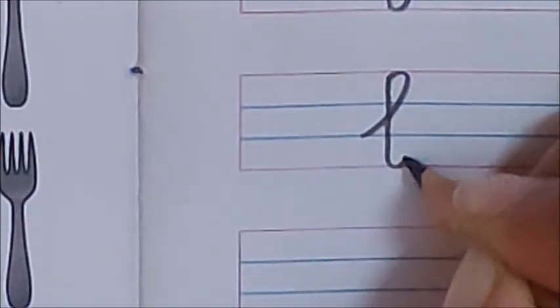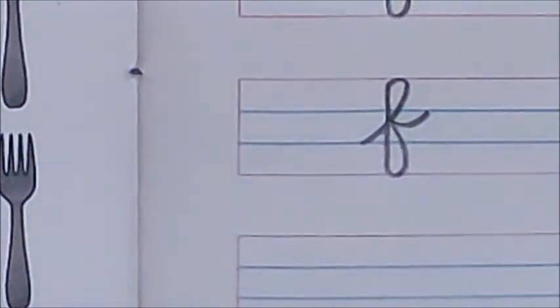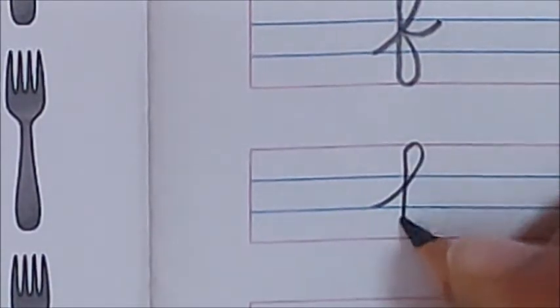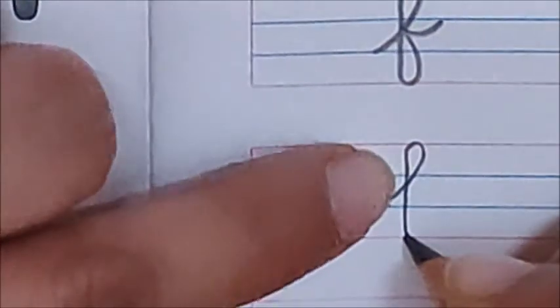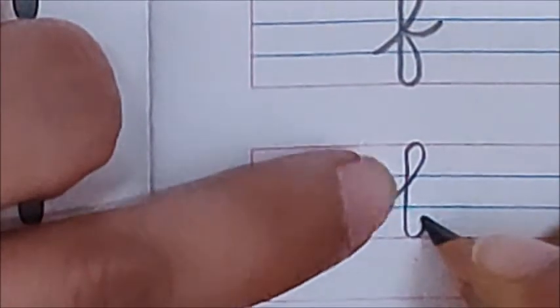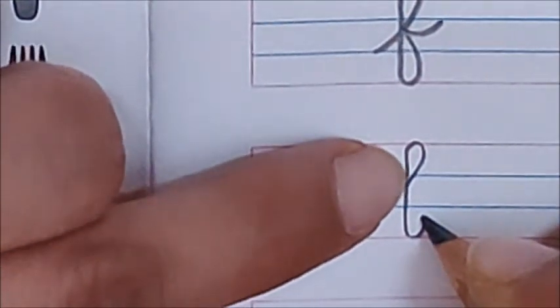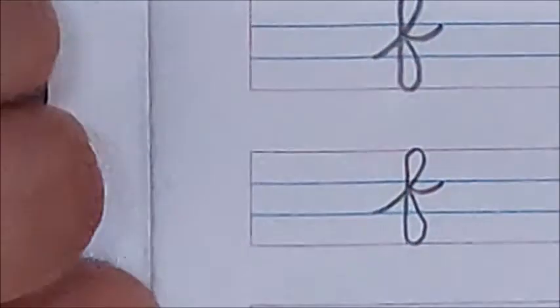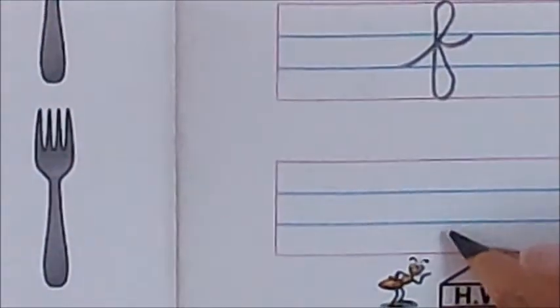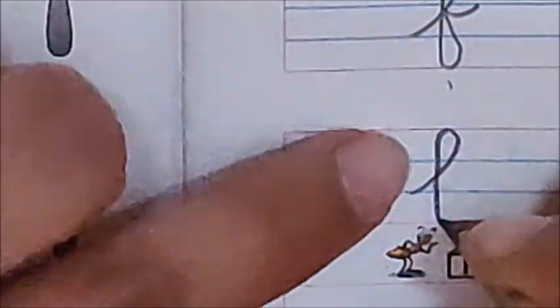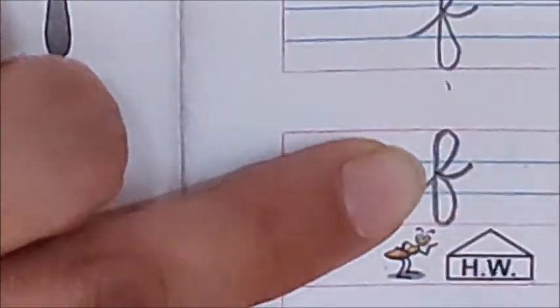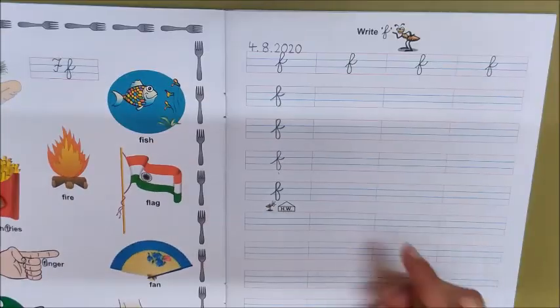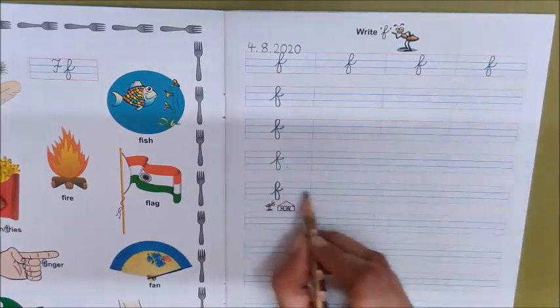Go up. Down. Up. And then again up. F. Go up. Down. See, children? Children, you have to bring this pencil and touch it here. Can you see this point? Yes. Bring it till here. And then again up. F. Go up. Down. Touch this point. And then again up. Okay, children? So, today you will write letter F on these lines.